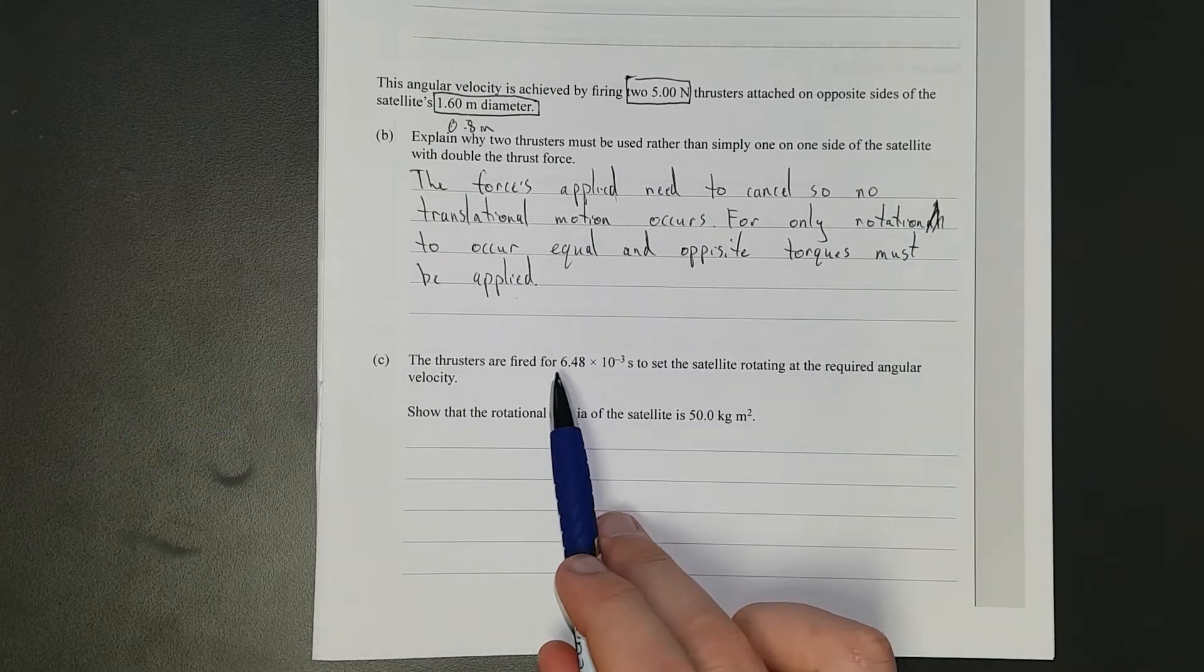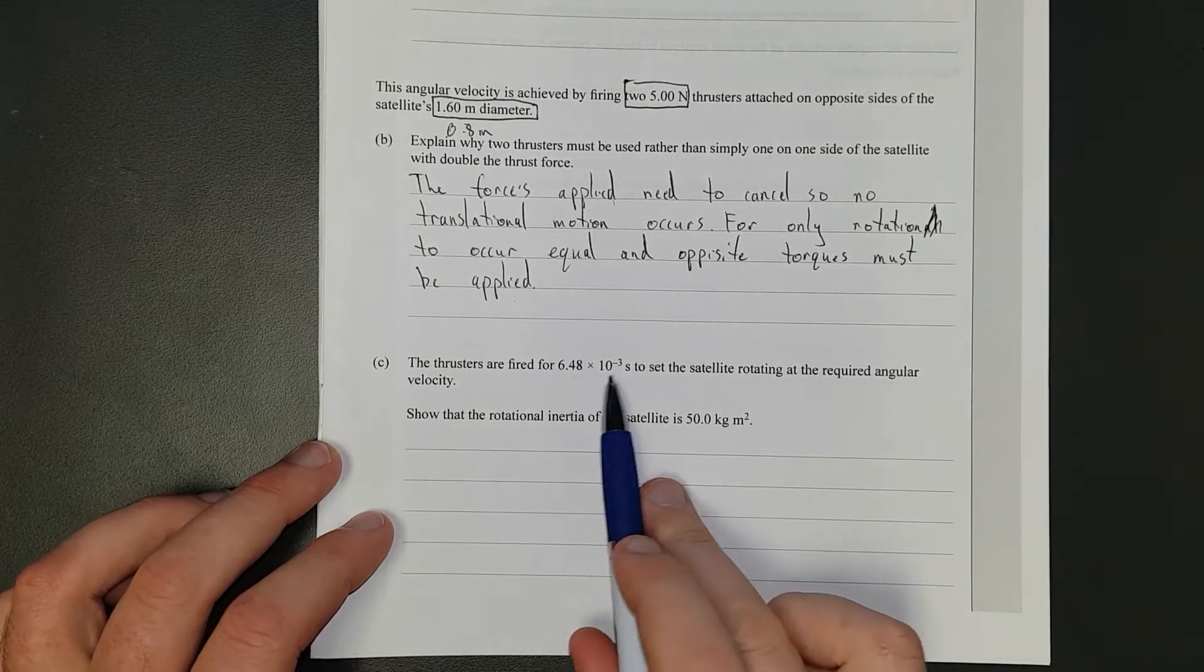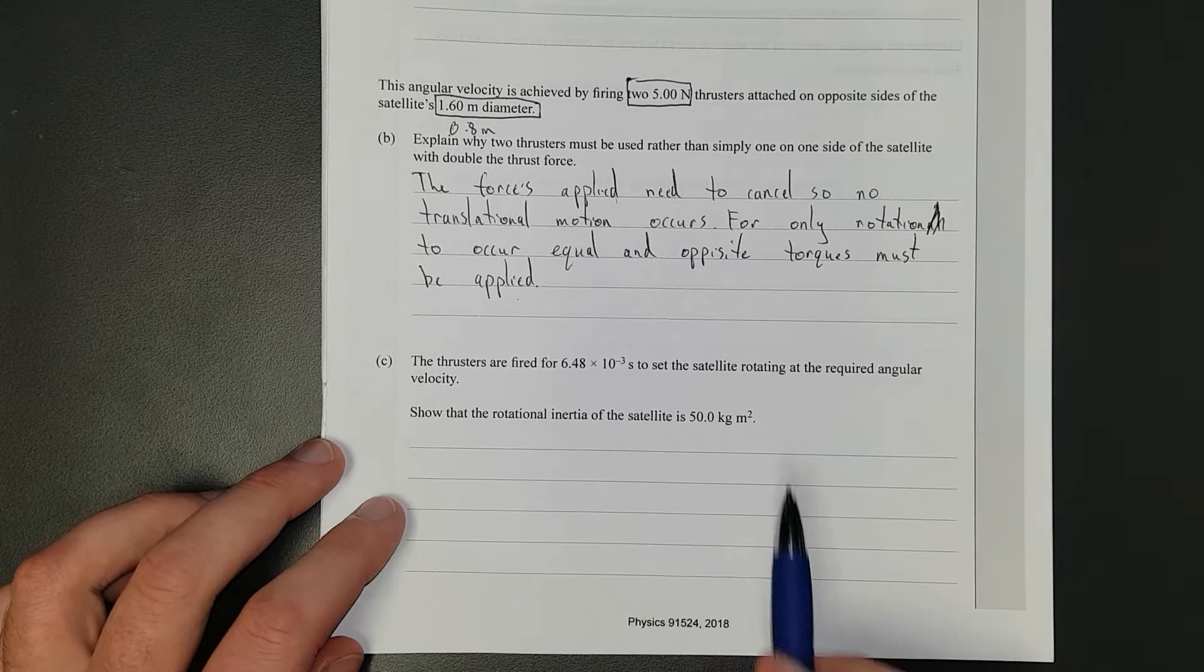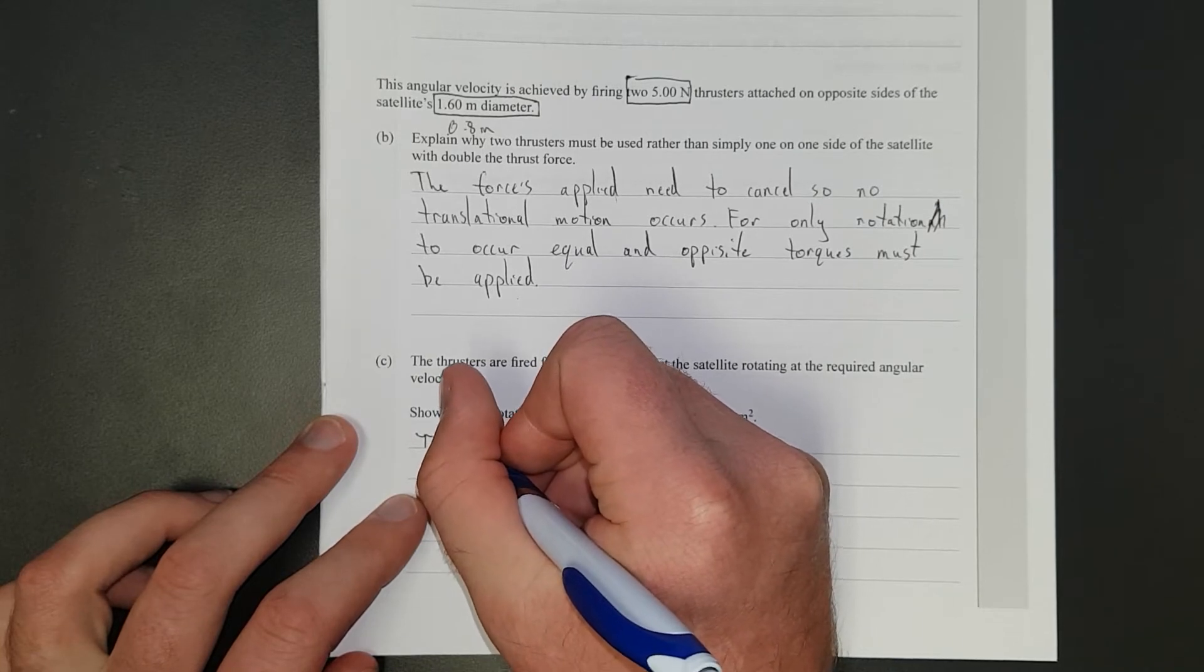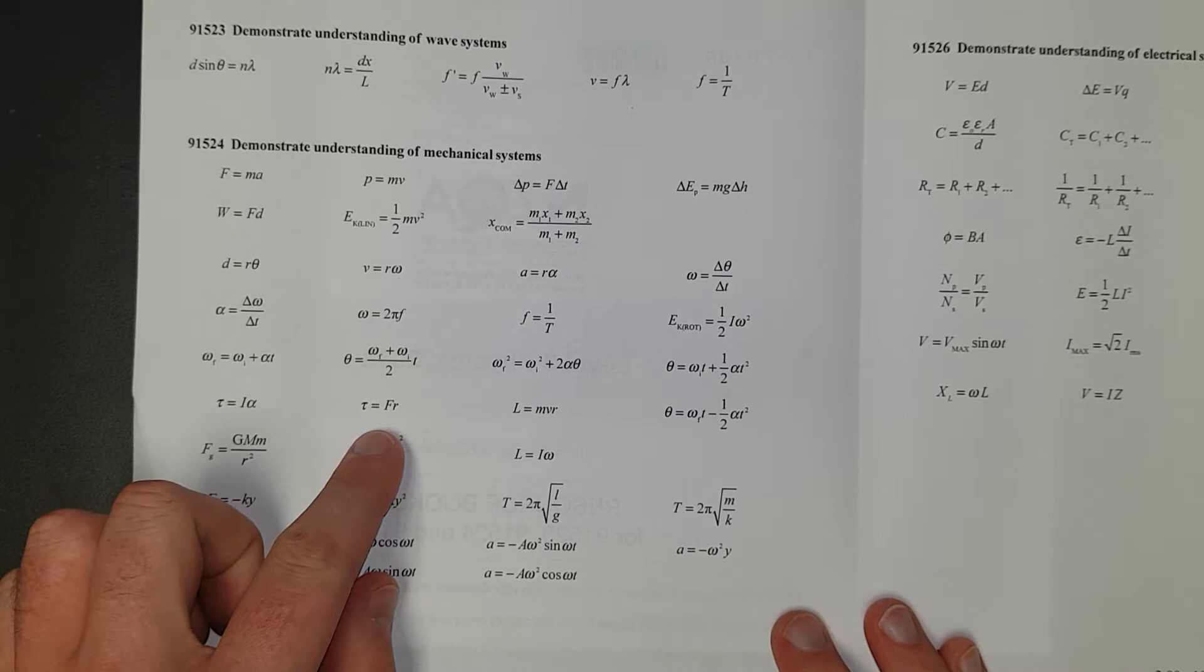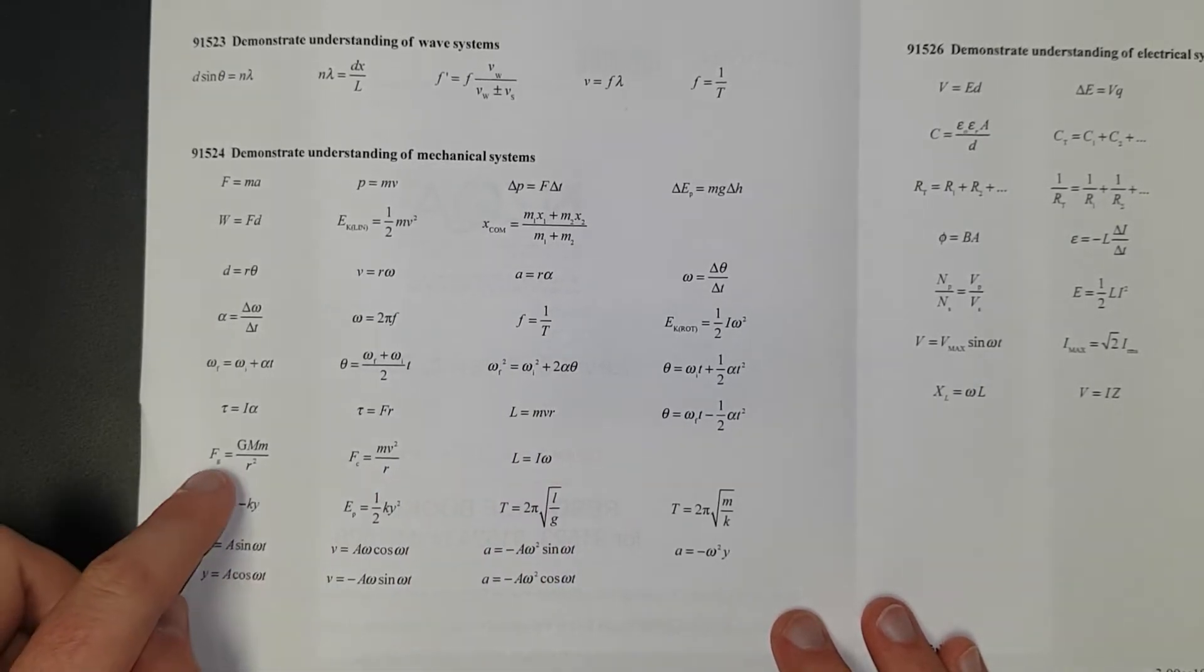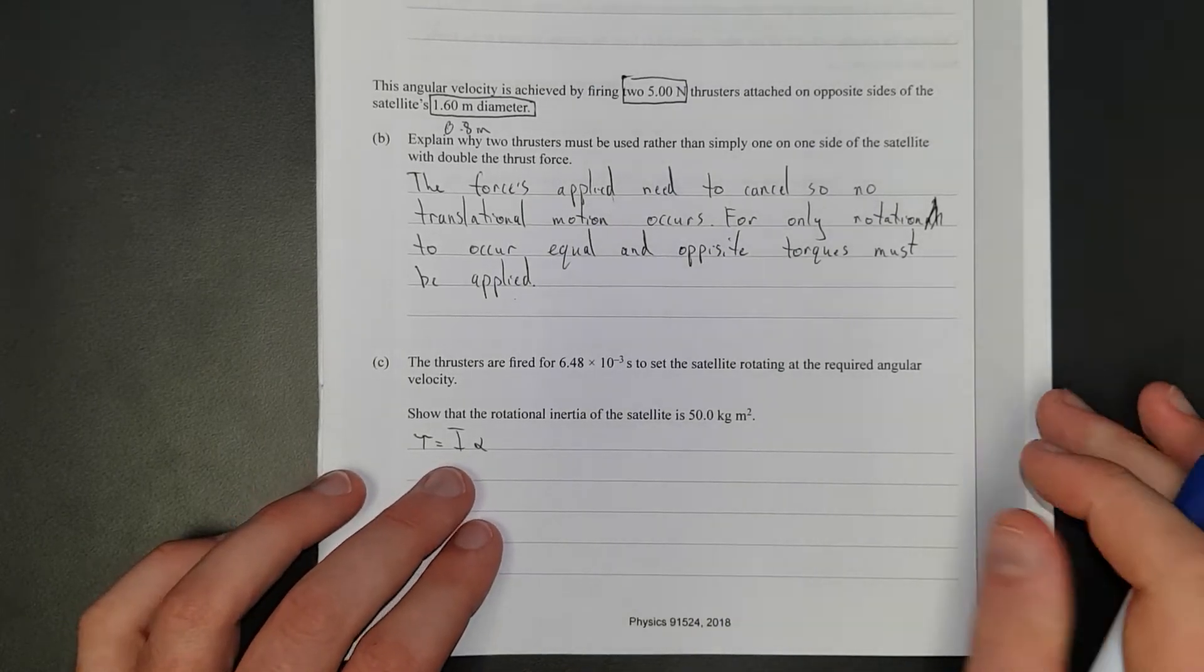The thrusters are fired for a very short amount of time to set the satellite rotating at the required angular velocity. It's 6.48 times 10 to the negative 3. Show that the rotational inertia of the satellite is 50 kg meters squared. So, we've got a torque. Torque is equal to the rotational inertia times the angular acceleration. It's in our formula sheet. I'll show you what formulas we're probably going to be using. These here, we'll be using that one, guarantee it, we'll be using that one. That one probably not because it's an ugly sort of thing. It's not just a point source at the end of a string. Probably use that. We've already used that and that. You could probably use these, but I don't know, probably not. I won't need to use them because I can already roughly guess what the answer is going to be.